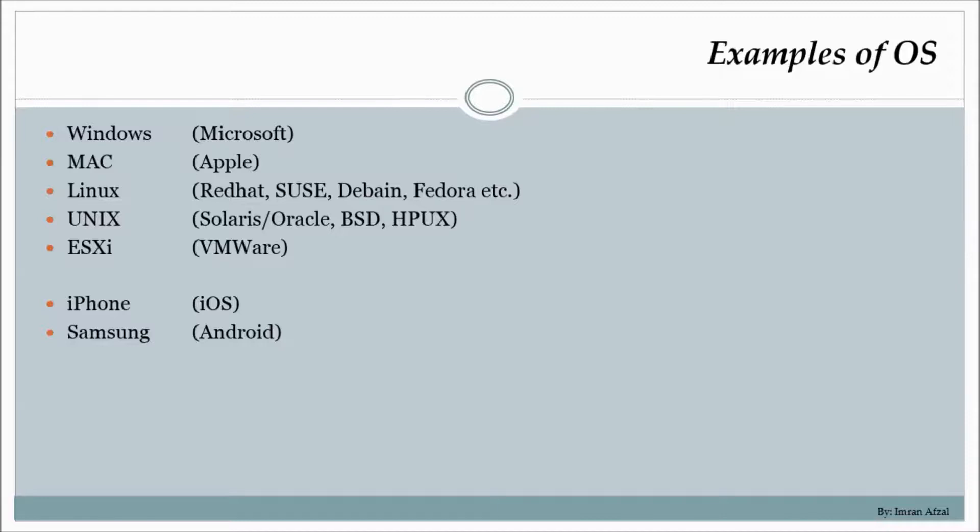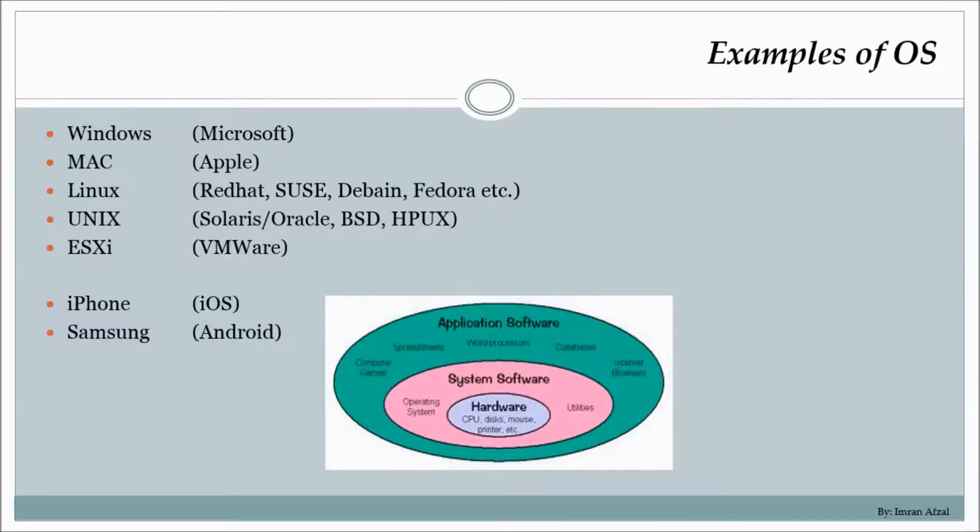Let's take an example in a graphical way. If you notice right at the bottom circle, you have hardware. Hardware is a piece of brick - it has CPU, disk, mouse, printers, all that stuff. How do you control that hardware? In order to control that hardware, you need an operating system, and that's where that pink circle comes in. The pink circle is the one that actually tells the hardware what to do. It has all the utilities, all the tools, and it controls your hardware. This topic we are covering - everything about this system software, and that system software is the operating system.